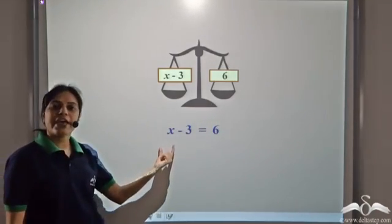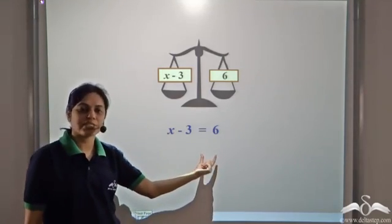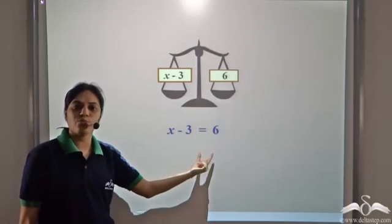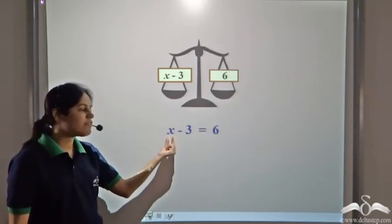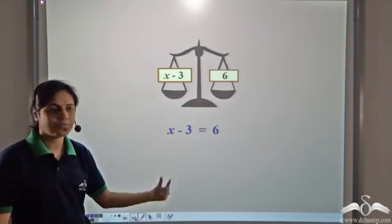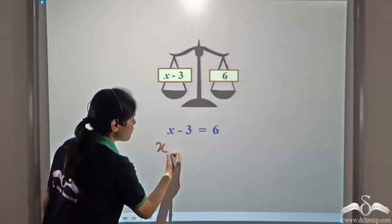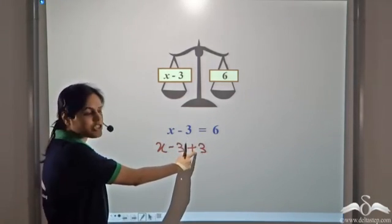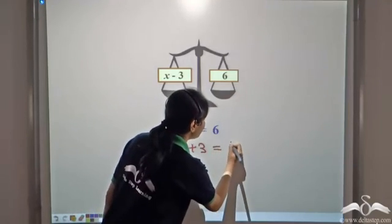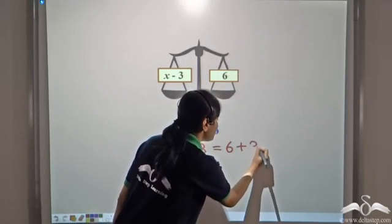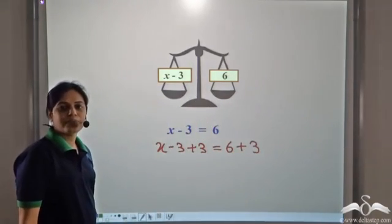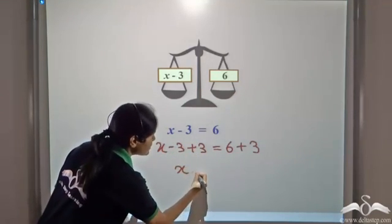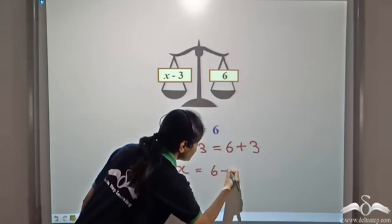If we have x minus 3 is equal to 6, in order to solve this, we need to add 3 to both sides so that we have only x on one side. So we have x minus 3 plus 3 on the left hand side, and 6 plus 3 on the right hand side. So minus 3 plus 3 gets cancelled, and we have x is equal to 6 plus 3.